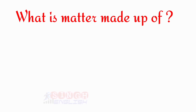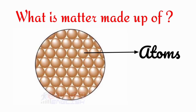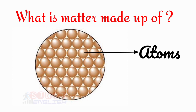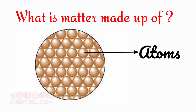The answer is matter is made up of small particles called atoms. These atoms are so small that they cannot be seen even by the most powerful microscope.